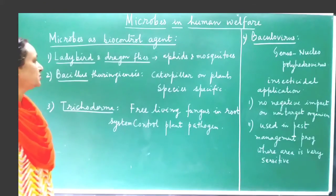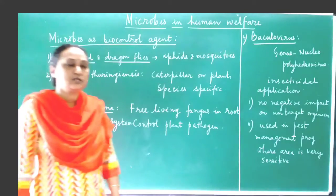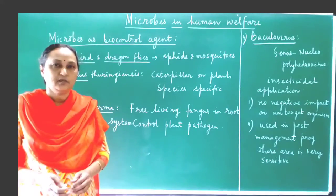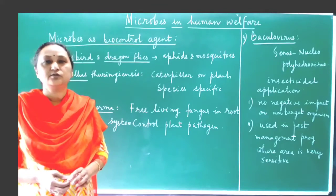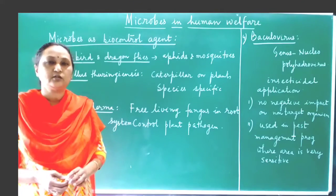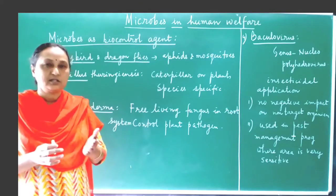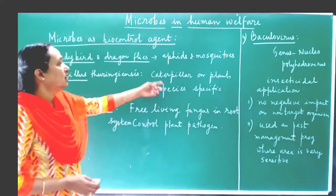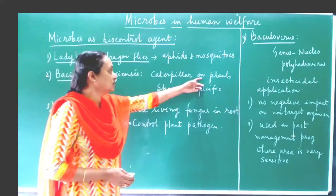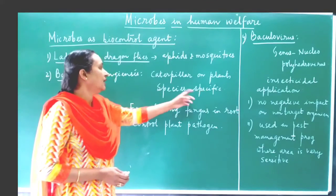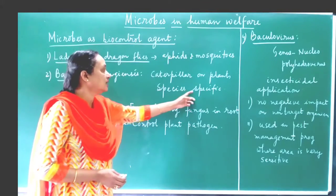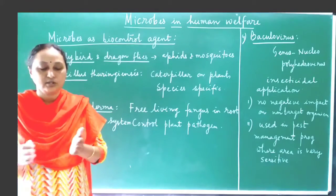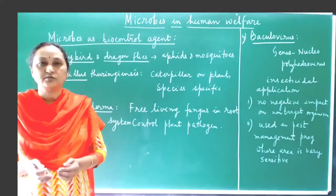The second example is Bacillus thuringiensis. Bacillus thuringiensis is a kind of bacteria. This bacteria can produce a toxin which is called Bt toxin, and the Bt toxin can destroy the caterpillars which are growing on plants. So Bacillus thuringiensis is a toxin producer.